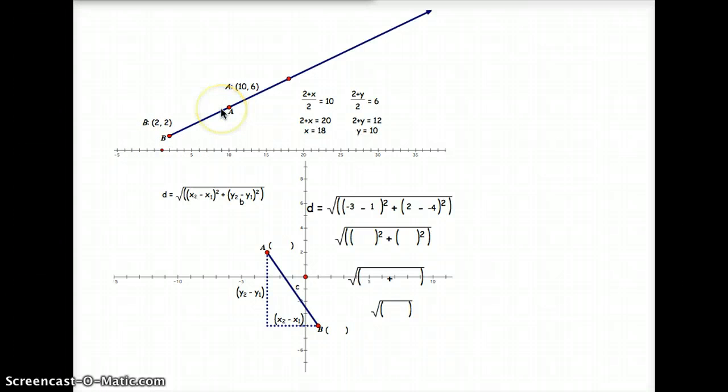If I want to find the coordinates of the other end point, I can plug in what I know the midpoint to be to find the coordinates of this end point here. So if I use my formula, x1 plus x2 divided by 2, and y1 plus y2 divided by 2, I can plug in what I know.